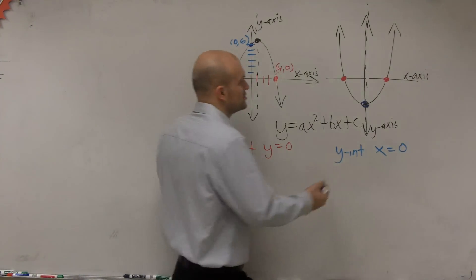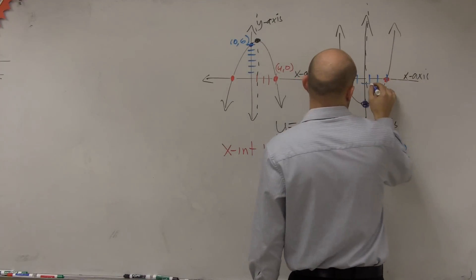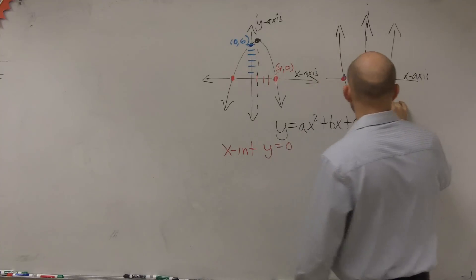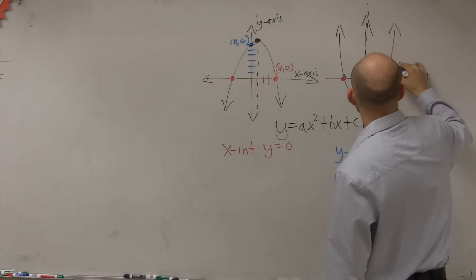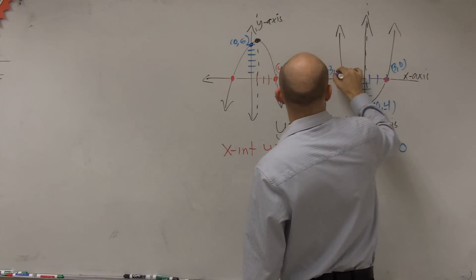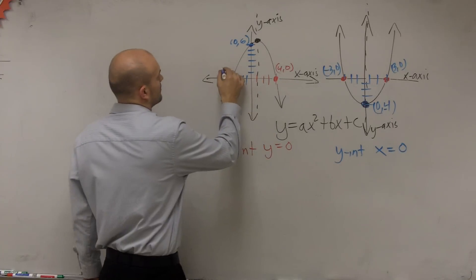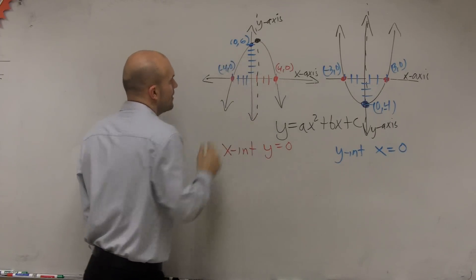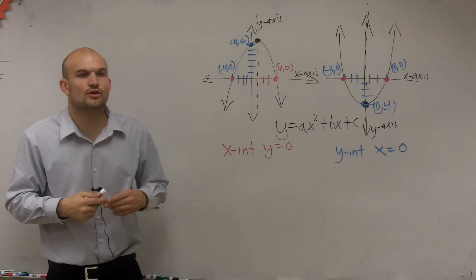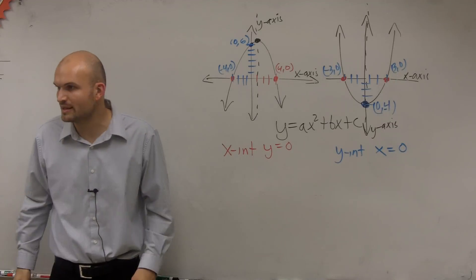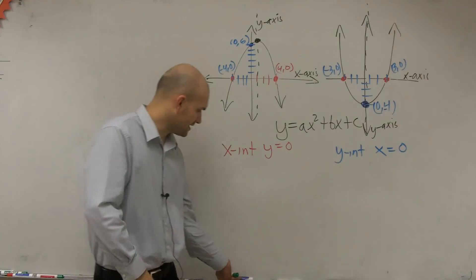So let's look at these two points. This one would be (0, 4) and (0, negative 4). And this one is (3, 0) and (negative 3, 0). You guys can see how these points work. So how do I find — if I give you an equation — how are you going to determine what the x and y-intercepts are?